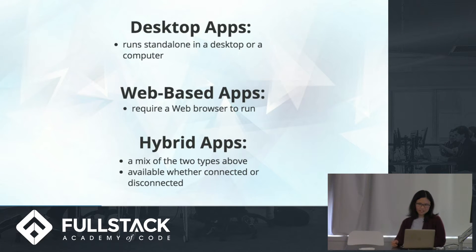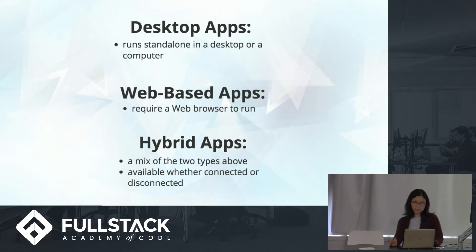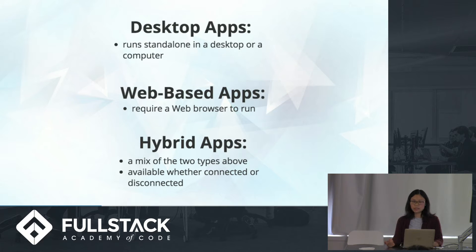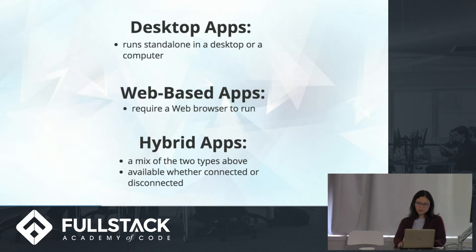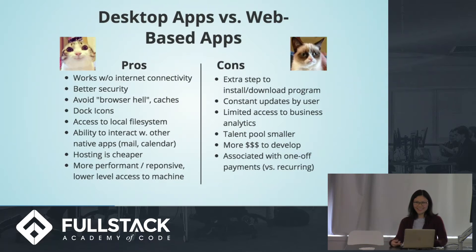Let's go over the differences of the three main types of apps that we use and interact with daily. Desktop apps typically run standalone on a computer that you download. Web apps require a browser to run. And hybrid apps, which are becoming more popular nowadays — like Spotify and Slack — have two versions: both desktop and web-based. One key thing to note is that hybrid apps are usually available whether you're connected to the internet or disconnected, which is a big plus in our global age.